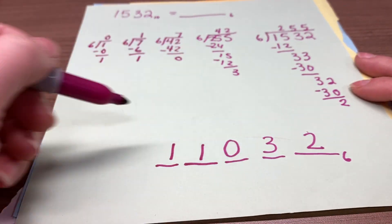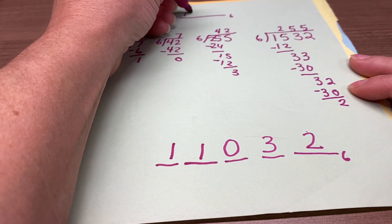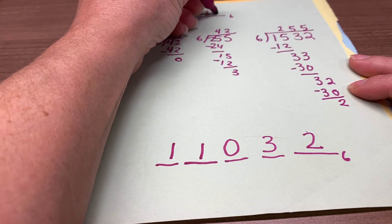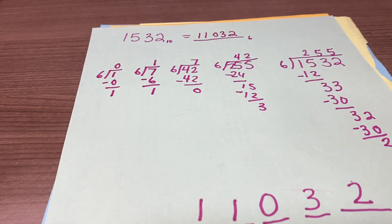So, there is our base 6 number that matches 11532. Alright, go to town on that, folks.